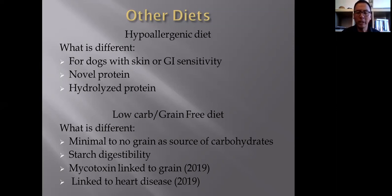Minimal to no grain. So rather than using maize, wheat, rice as a source of carbs, they use things like sweet potato as a source of carbohydrates. Then talking about the potential starch digestibility as well, whereby it's just different sorts of starch.